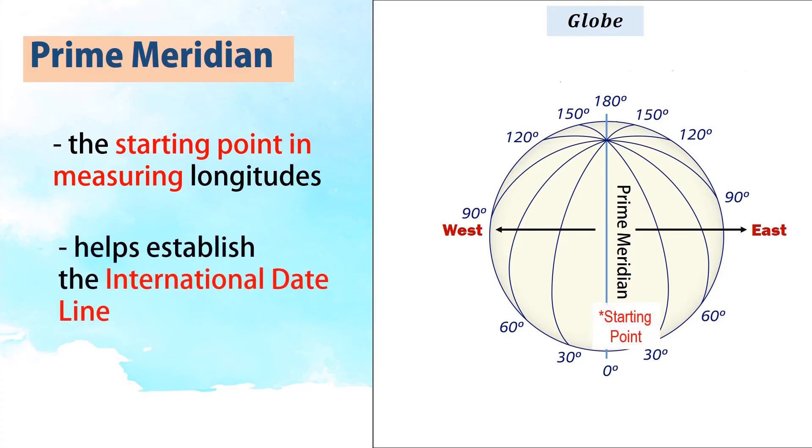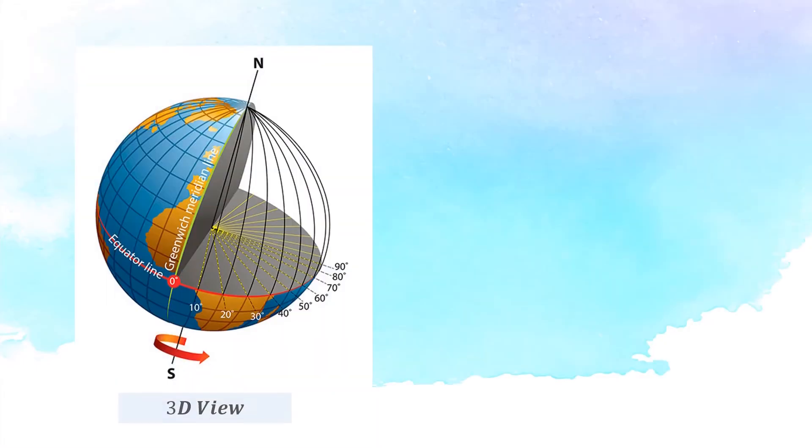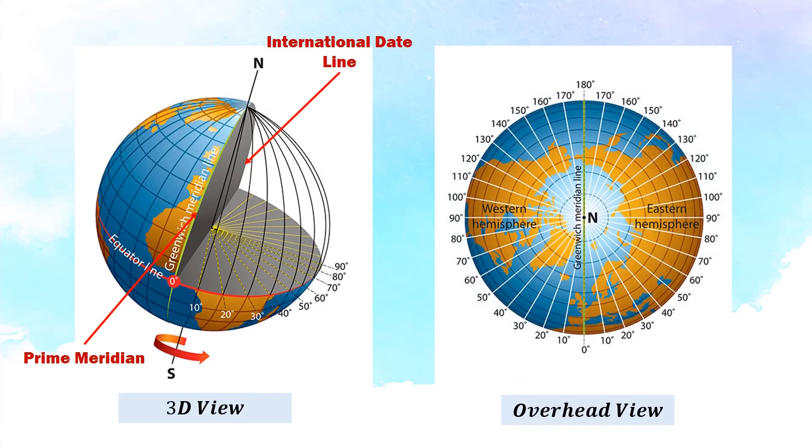The prime meridian helps establish the international date line on the globe. This line in front of you is the prime meridian, while the line at the back of the globe, which is the opposite of the prime meridian, is the international date line.